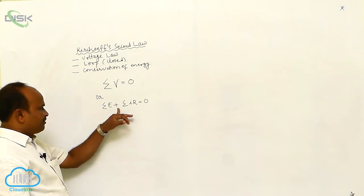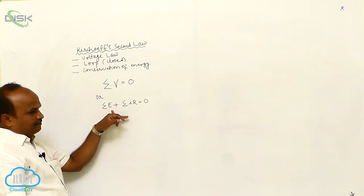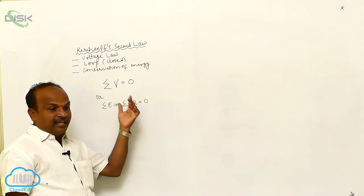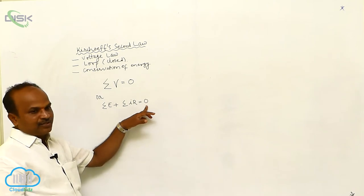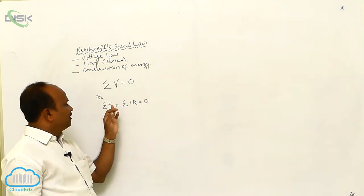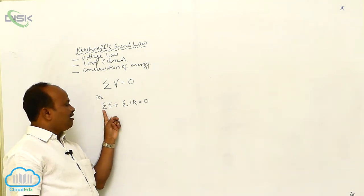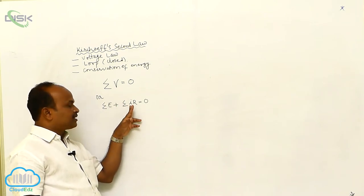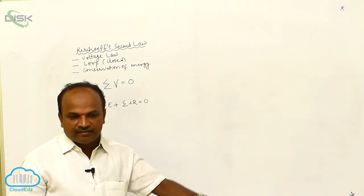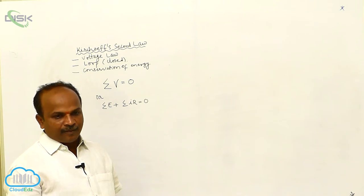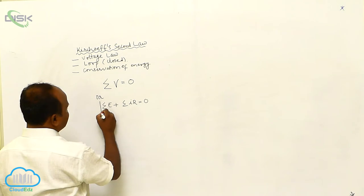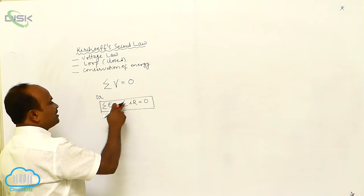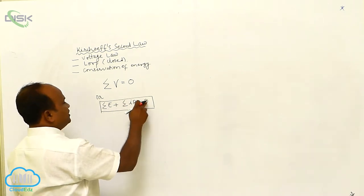The algebraic sum of EMFs in a circuit and the algebraic sum of products of currents and resistances in various branches of the electrical circuit is equal to zero. While solving problems, this is the statement we generally use: algebraic sum of EMFs plus algebraic sum of I×R equals zero.